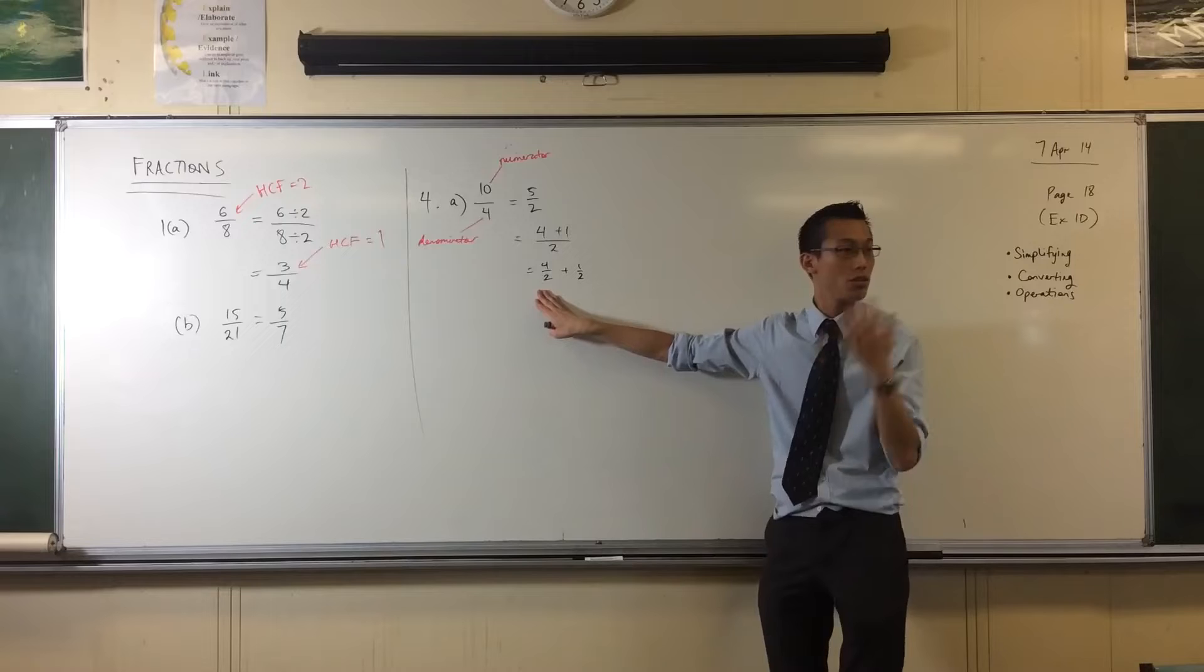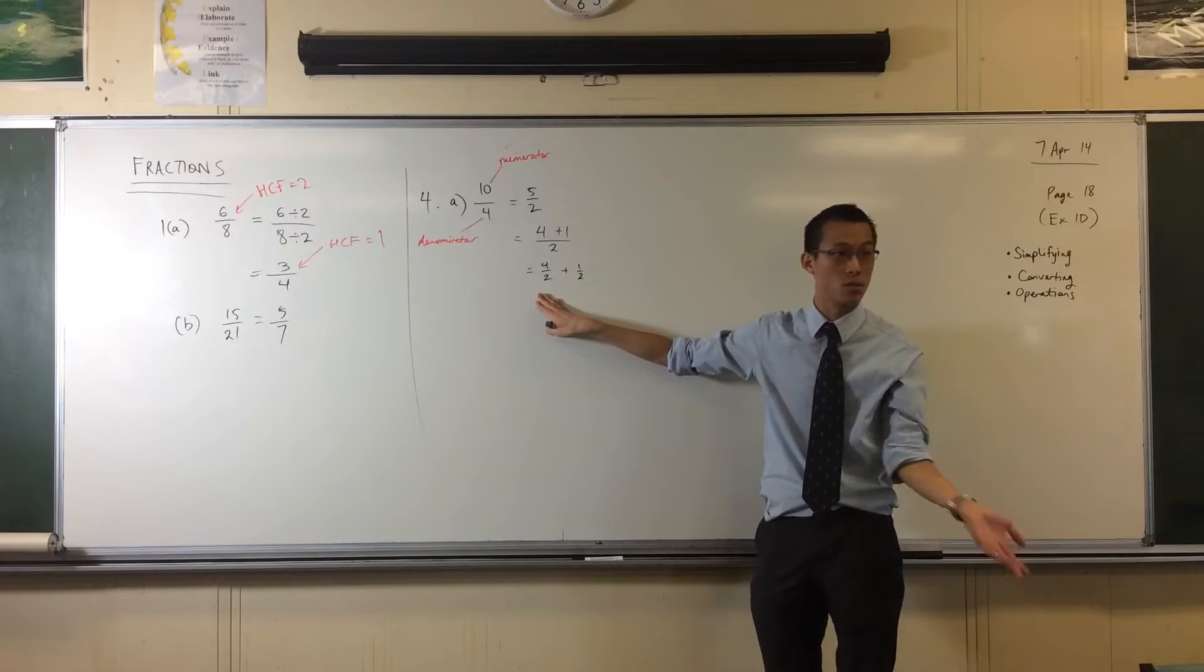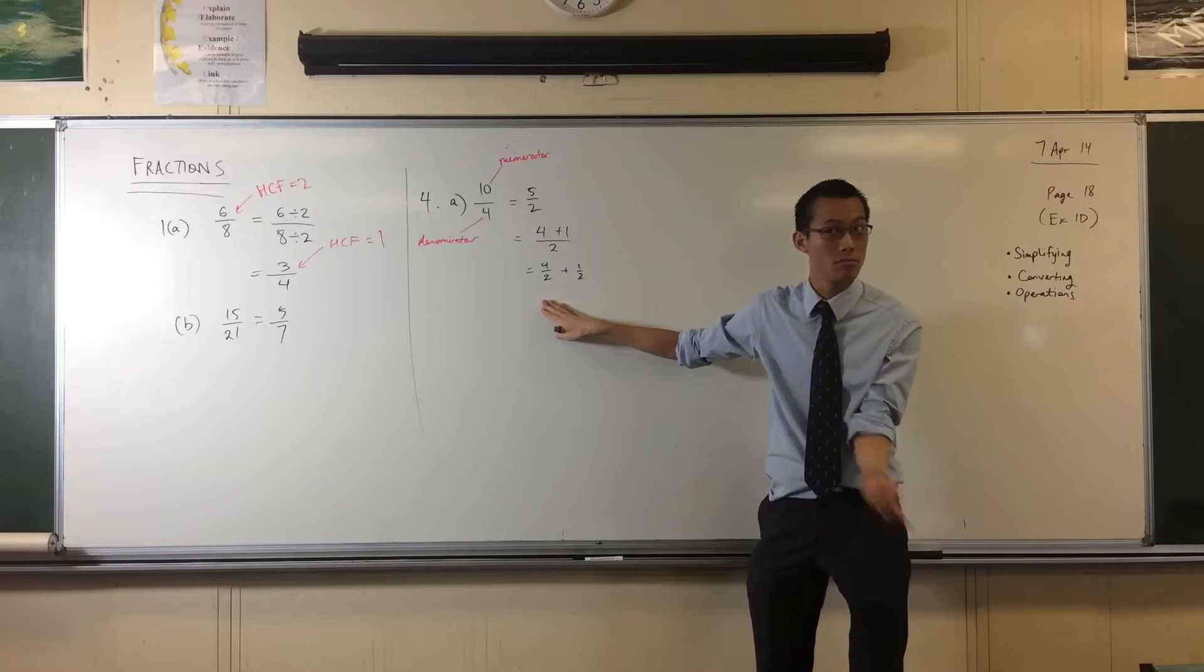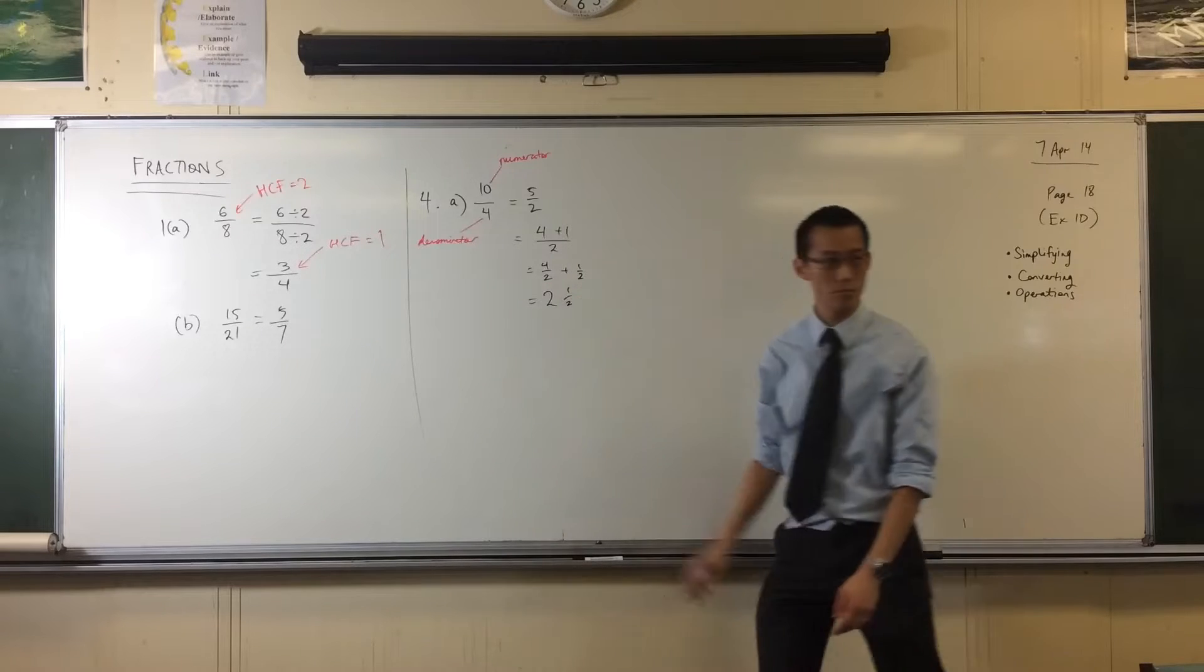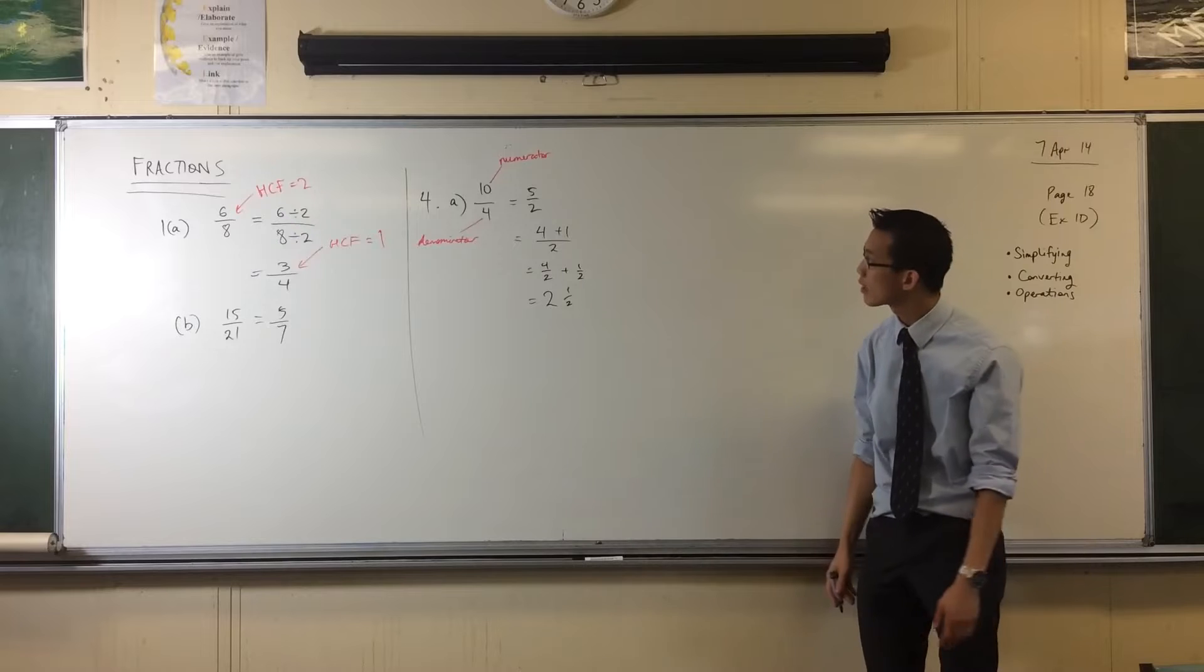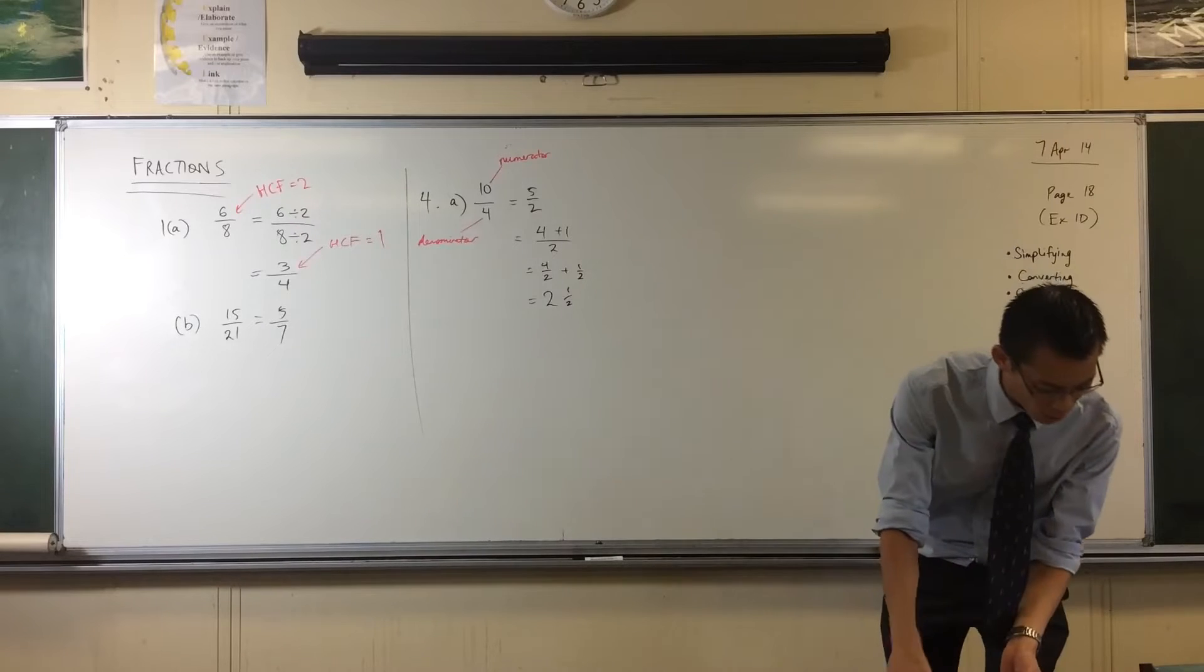And four over two, you can simplify, you can reduce. What's the highest common factor? It's two. This becomes just 2 plus a half. There you go. All right, let's try a harder one. Let's see.